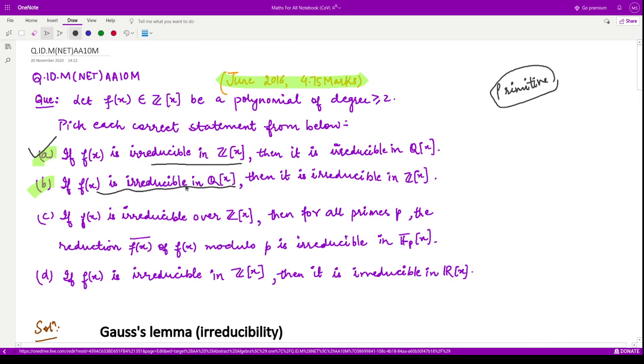What about option B? They are saying f is irreducible in Q[x], but nothing is known about primitiveness. Therefore this option is incorrect according to Gauss's Lemma.